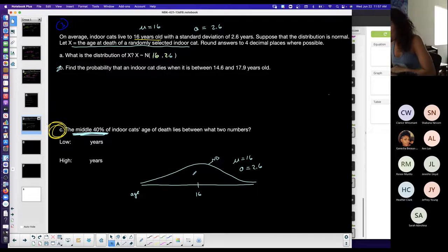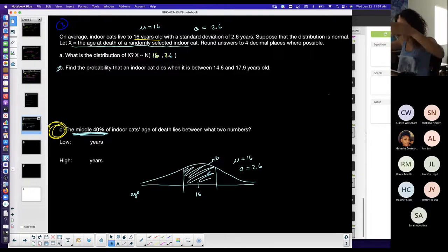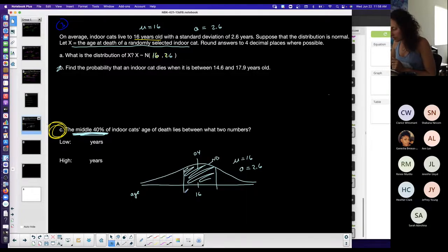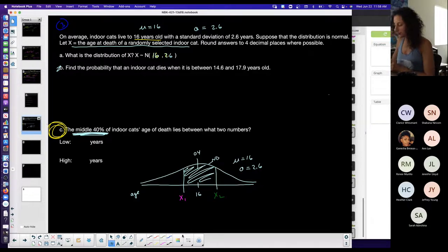Middle 40% means the center 40%, so this total light blue is 40% or 0.4. I want to know, we'll call this x1, I want to know what values separate this middle 40%, and then x2.